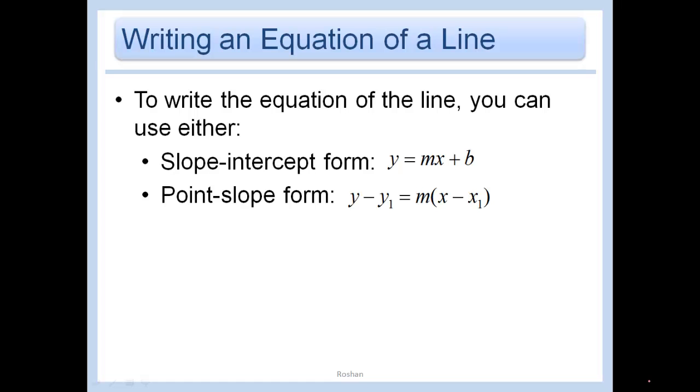Alright, let's write some equations of lines. To write the equation of a line, you can use either slope-intercept form, which is y equals mx plus b, or you can use point-slope form, which is y minus y1 equals m times x minus x1, where x1, y1 is one of your points, and m, of course, is your slope.